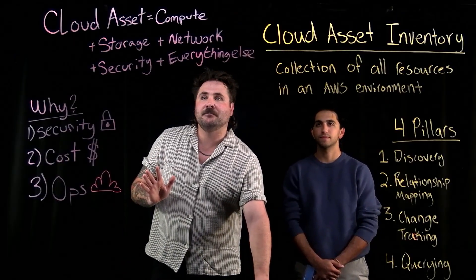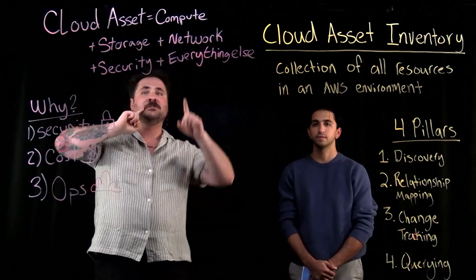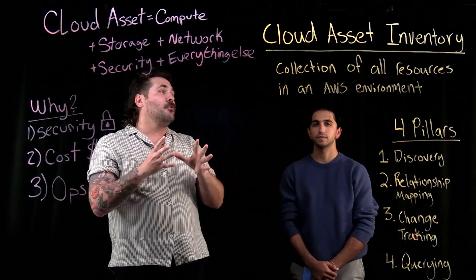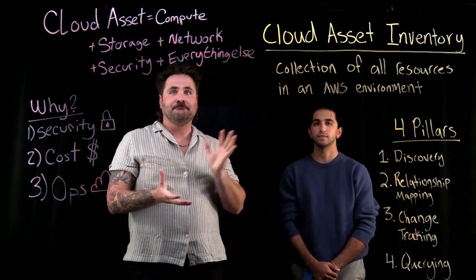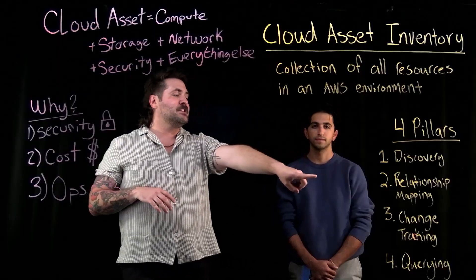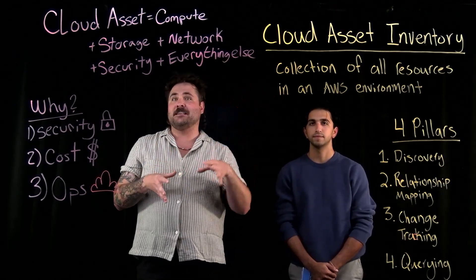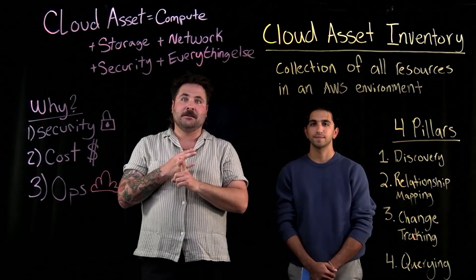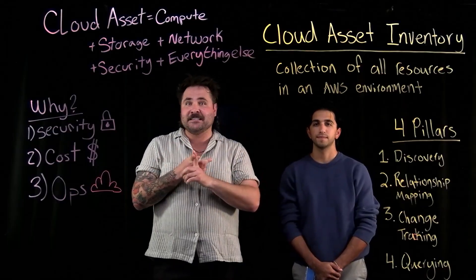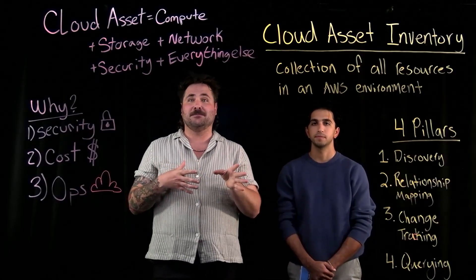We covered a lot there, but let's do a quick recap. Cloud assets encompass everything within your entire AWS infrastructure — that includes compute, storage, network, security, and everything else like metadata, tag data, etc. Your cloud asset inventory is a complete catalog of all those resources across your environment all in one place, that is easy to query and analyze. We've also covered the four core pillars of what makes a great cloud asset inventory: discovery and collection, relationship mapping, change tracking, and querying and analysis. It's all about leveraging the knowledge inside your cloud asset inventory to build faster, safer, and more scalable apps on AWS. A cloud asset inventory is foundational to everything else you need to do in the cloud. In our next video, we're going to be walking through design considerations you should take when building a cloud asset inventory for AWS — some of the architectural decisions, services you might use, and implementation patterns that actually work in production.